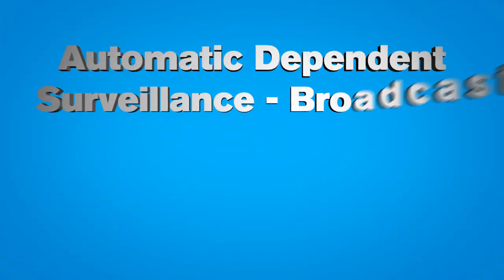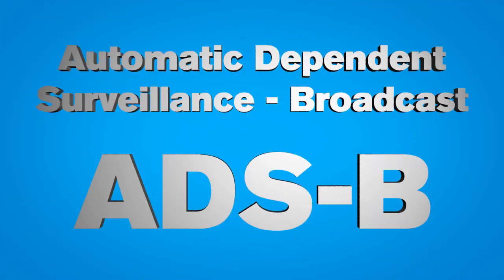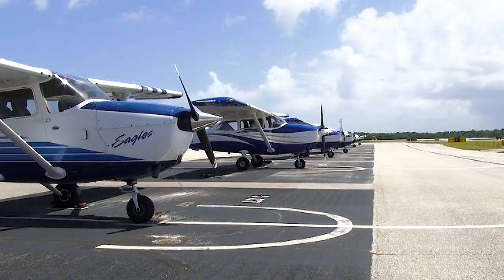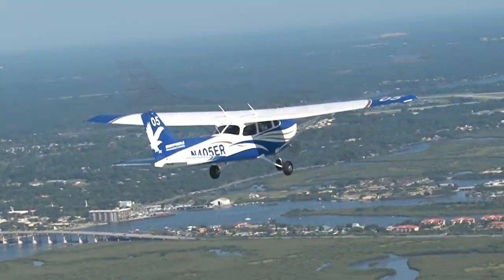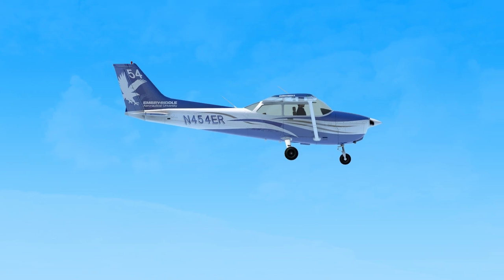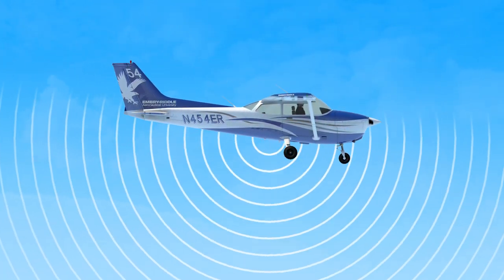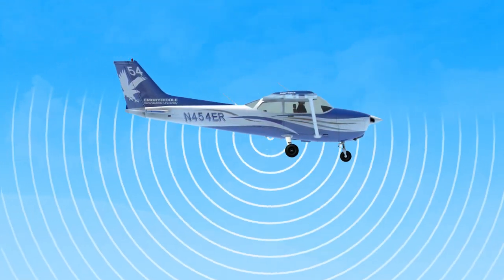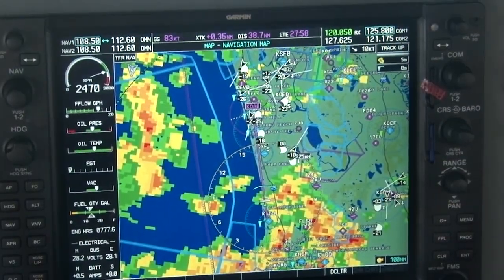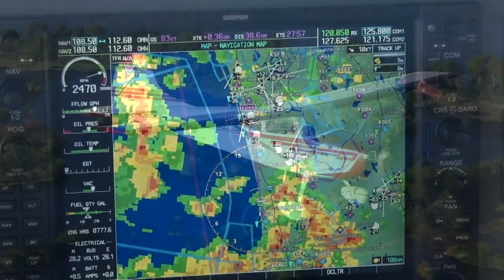Automatic Dependent Surveillance Broadcast, or ADS-B, is a system installed on all Embry-Riddle aircraft to help pilots locate traffic. ADS-B allows aircraft to broadcast their position to air traffic control and to other ADS-B-equipped aircraft, allowing other traffic to show up on a moving map display in the cockpit.